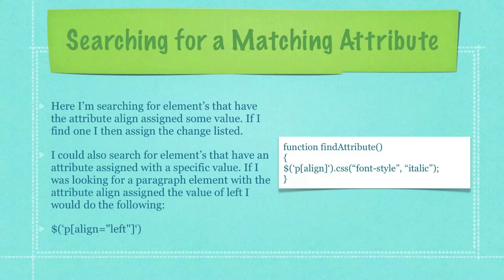Here I'm searching for elements that have the attribute align assigned to some value. If I find one, I then assign the change listed. I could also search for elements that have an attribute assigned with a specific value. If I was looking for a paragraph element with the attribute align assigned to the value of left, I would do exactly what you see here in the third bullet item.